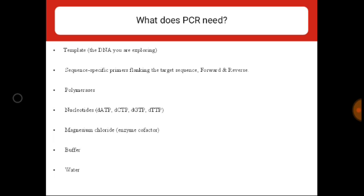Now let's discuss what PCR needs. First is template DNA preparation containing the desired segment to be amplified, also known as the target sequence. Second is two nucleotide primers — short oligonucleotide sequences about 20 bases long, complementary to the 3-prime border sequences at the 3-prime ends of the two strands of the desired segment. Third are heat-stable DNA polymerases such as Taq DNA polymerase, Pfu DNA polymerase, and Vent DNA polymerase.